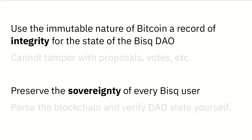There are two practical results of this data model. The first is that we use the immutable nature of the Bitcoin network as a record of integrity for the state of the BISC DAO — for example, nobody can change the content of a proposal after it's made. The second is that it preserves the sovereignty of every BISC user. Since all data is distributed on the Bitcoin blockchain and BISC peer-to-peer network, any BISC user can connect a full Bitcoin Core node to BISC and verify the state of the DAO for themselves. There's no need to trust anyone to determine how much BSQ you have or anyone else has, or what the results of a vote should be.